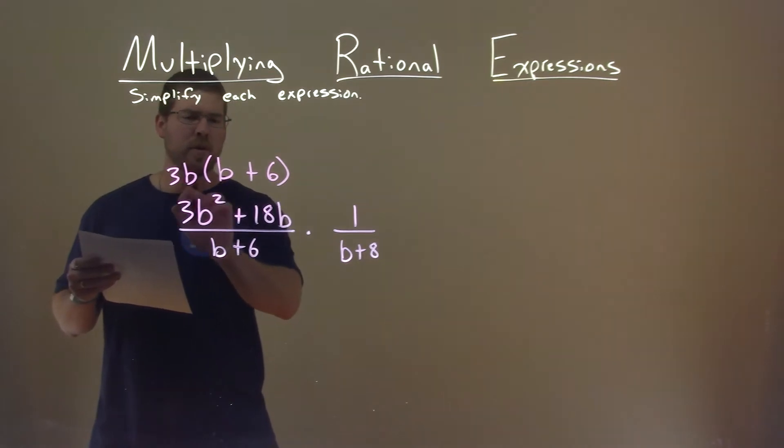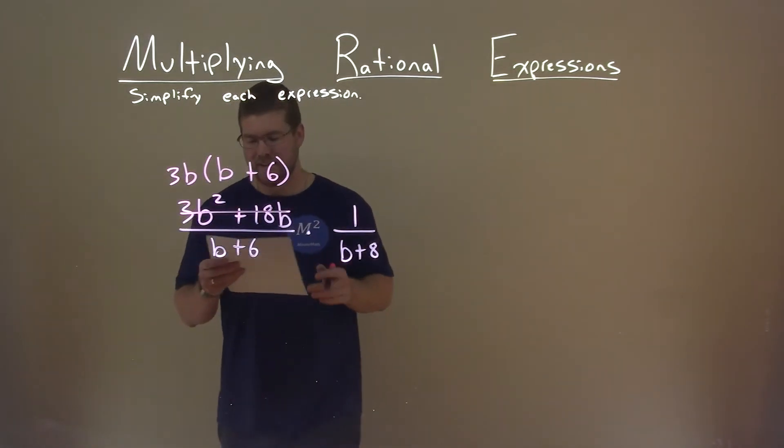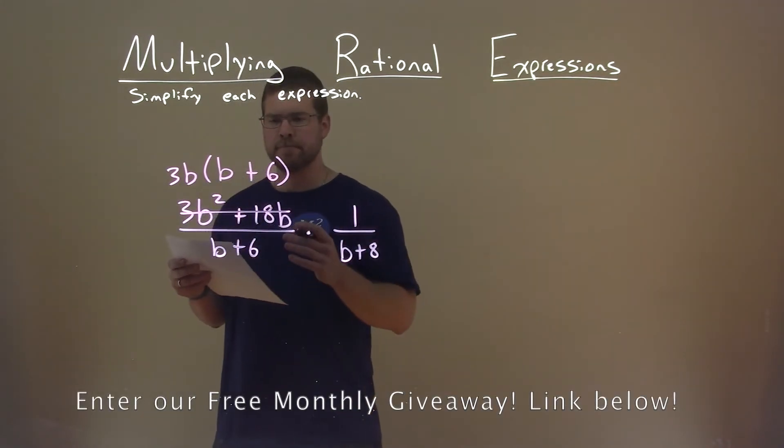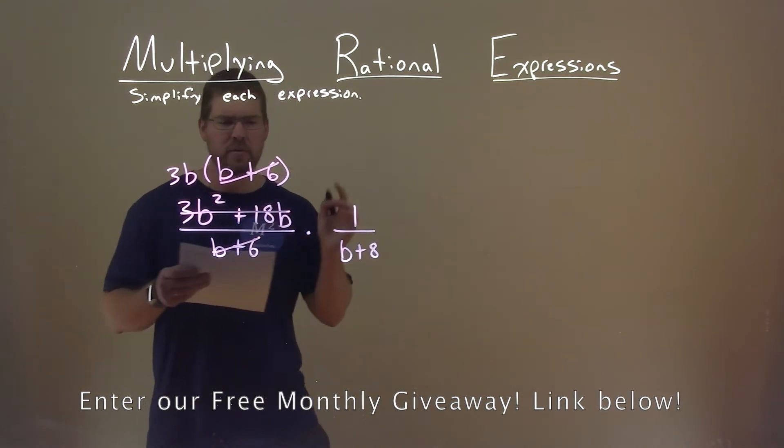So I have now 3b times b plus 6, and it's going to replace that 3b squared plus 18b. Nothing else really simplifies here. Well, kind of. b plus 6 and b plus 6 will cancel out.